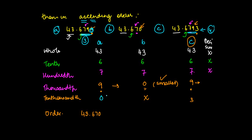Now if you compare between 0 and 3, which is bigger? 3. So obviously 43.6793 is greater than 43.679 or 43.6790.